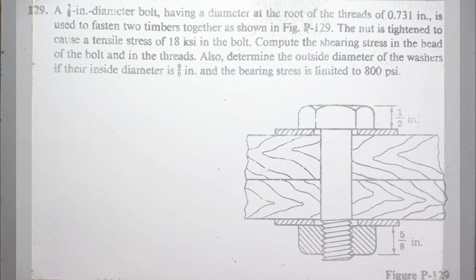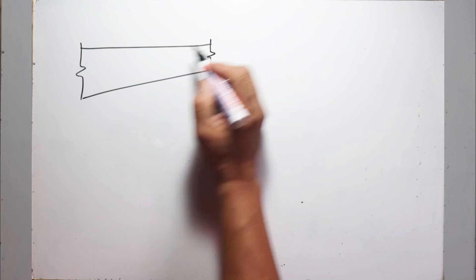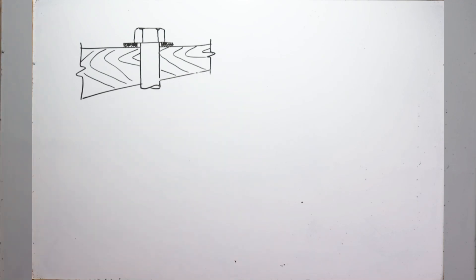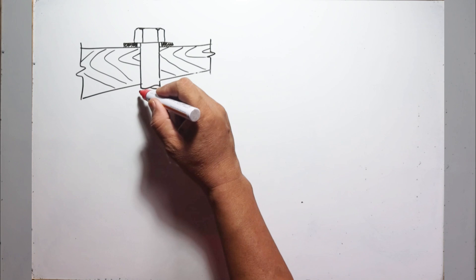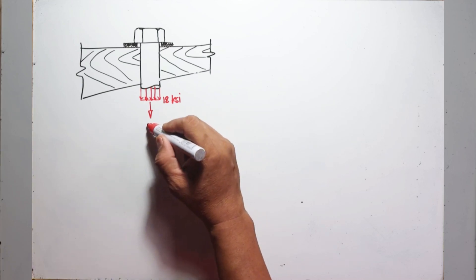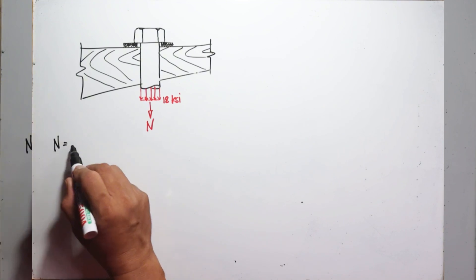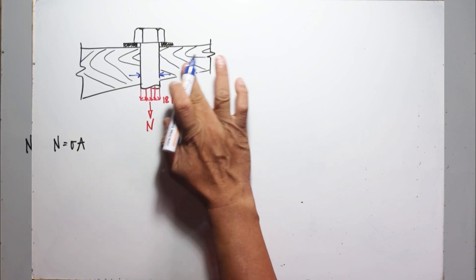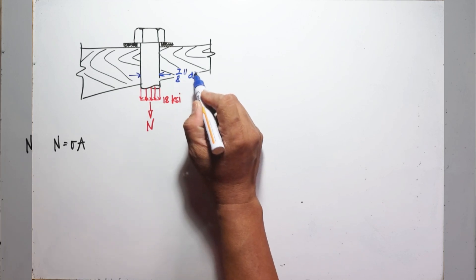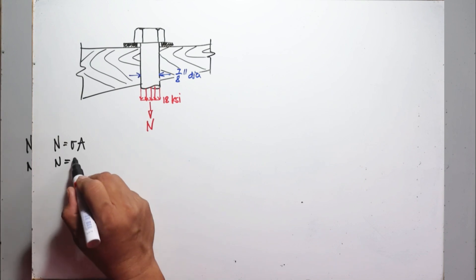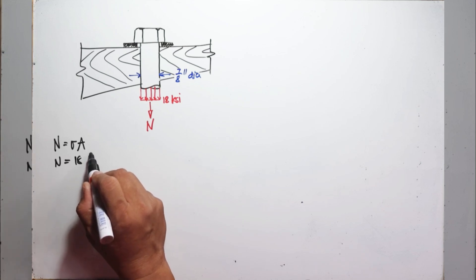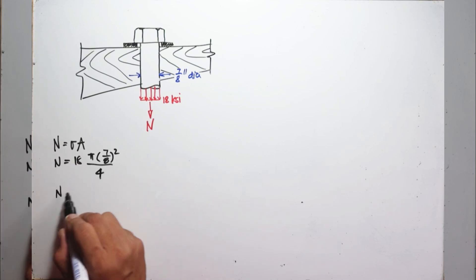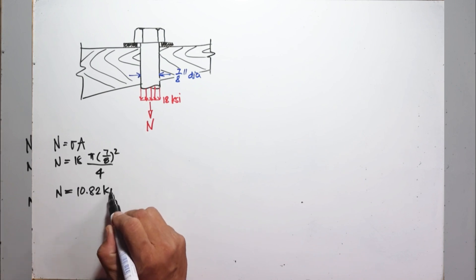Let us first draw the upper half of the joint. According to the problem, after tightening the bolts, a tensile stress of 18 KSI is developed. The total normal force N is equal to the tensile stress times the cross-sectional area of the bolt, where the bolt diameter is given as 7/8 inch. That is 18 KSI times (π times diameter squared over 4), and that normal force is 10.82 kips.